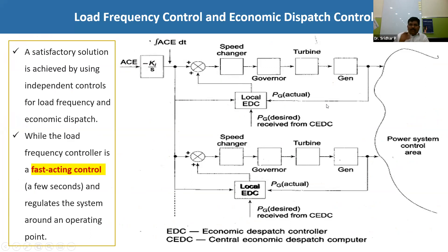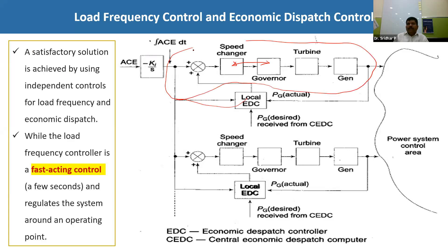Looking at the block diagram: there is a speed changer combined with the governor, then a turbine, and a generator load model. This represents the isolated power system. The signal ACE is the area control error, and delta_f is the change in frequency tapped from the output.